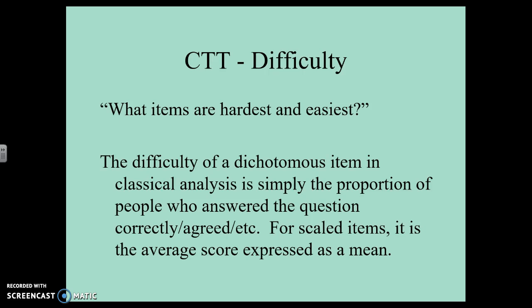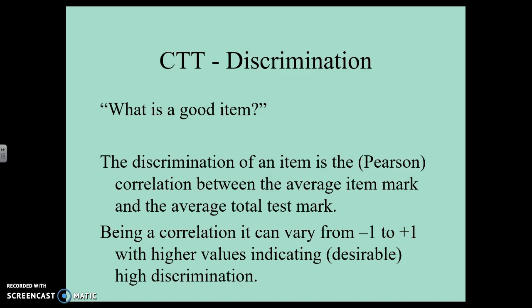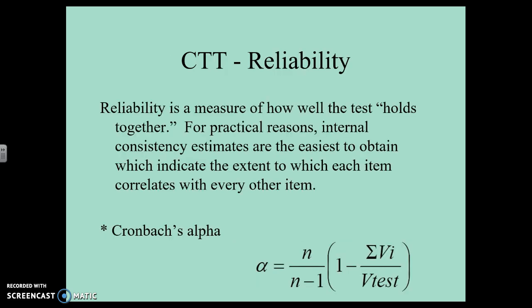So if everybody gets the item correct, that's an easy item; if people are not getting it correct, that's a harder item. Item discrimination looks at what makes a good item — we do that by correlating the item with the test as a whole. If the item correlates strongly with the test as a whole, it's a good item; if it doesn't correlate well, that item is not working. In classical test theory, reliability looks at how the test holds together — is everybody answering pretty much the same as a whole? We're going to use Cronbach's alpha for this.